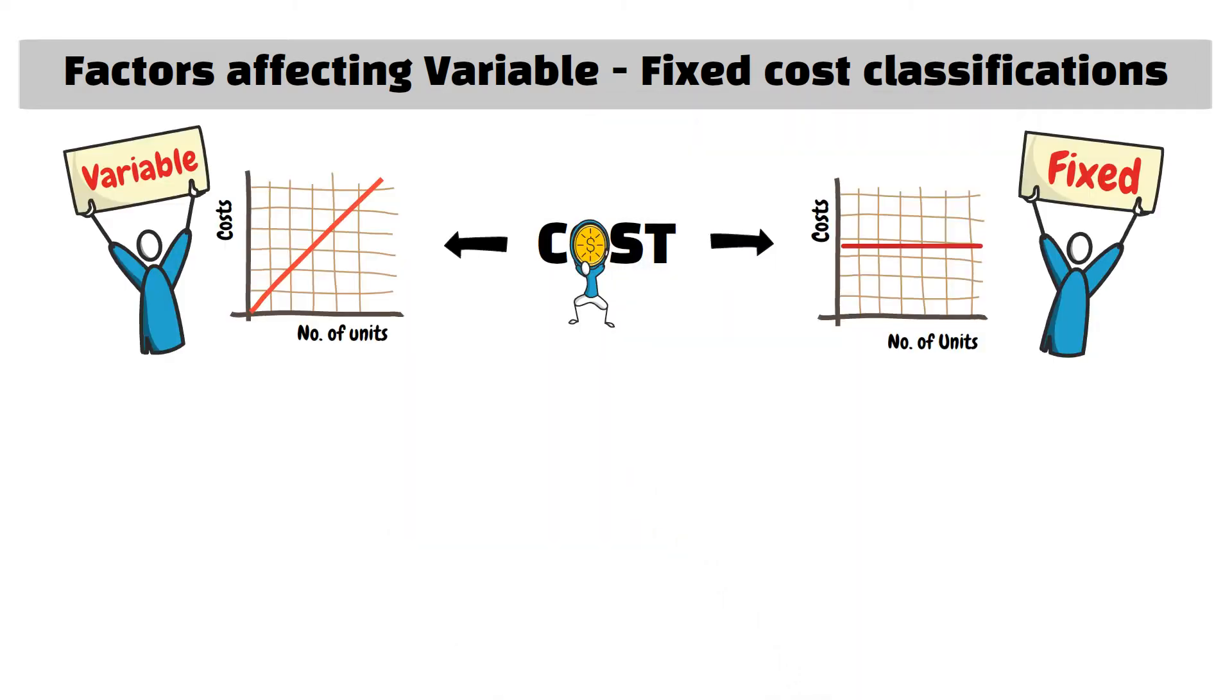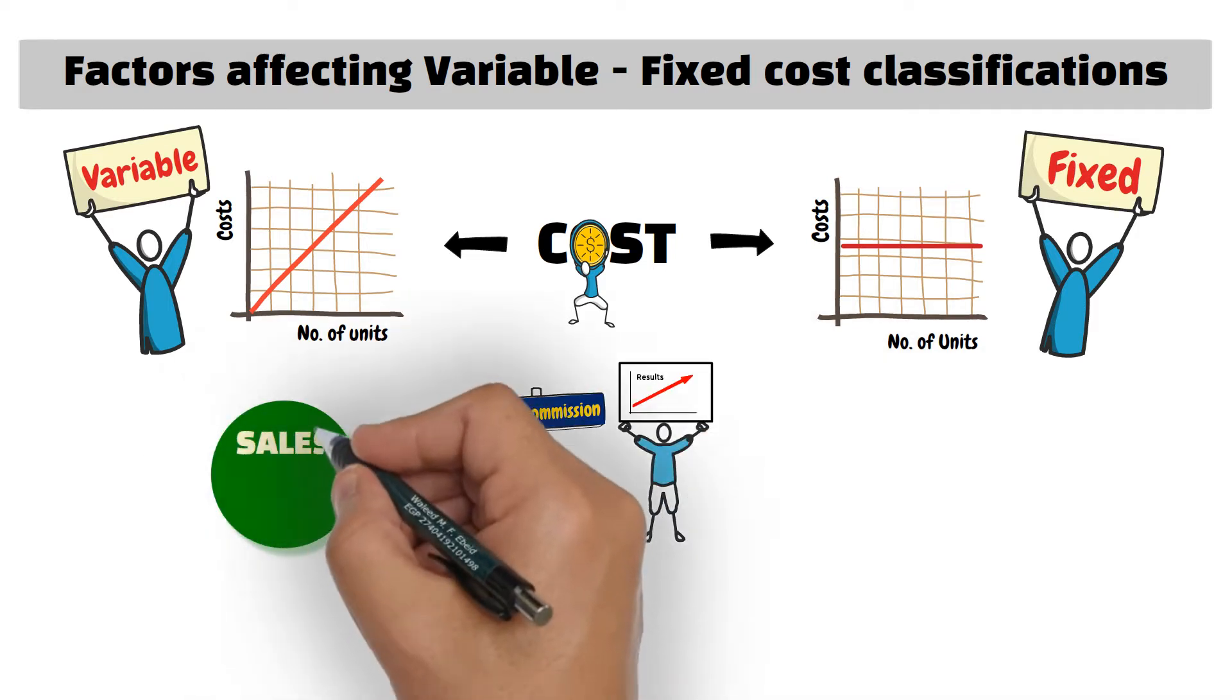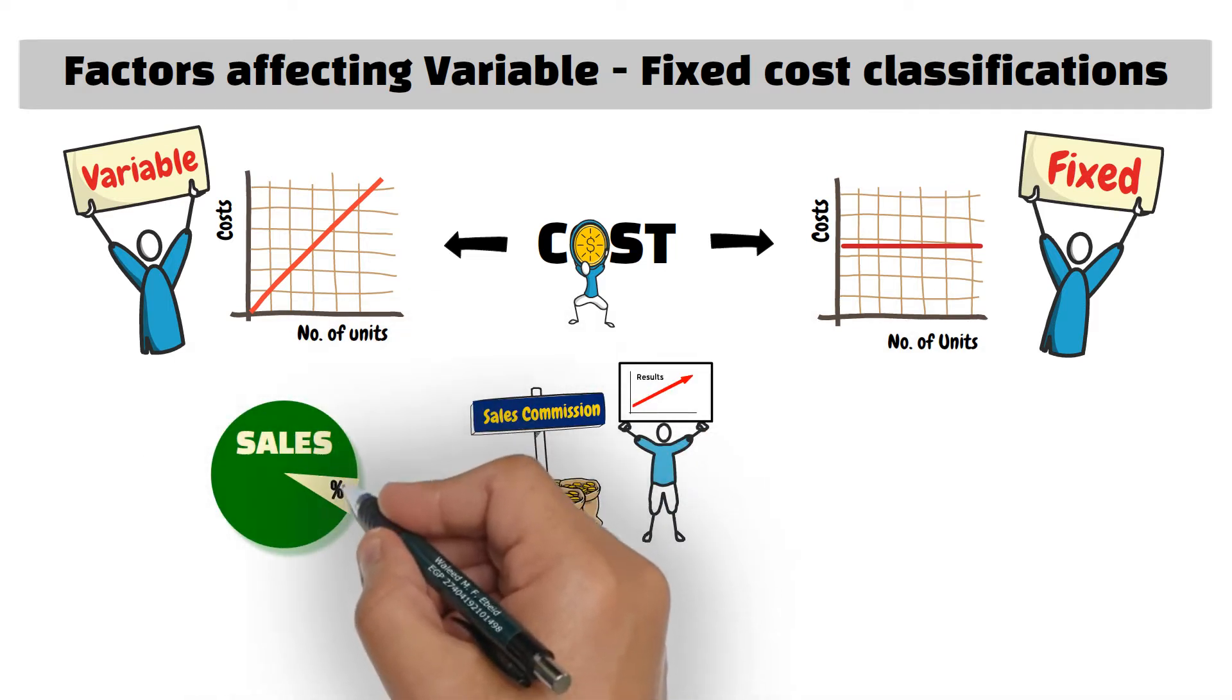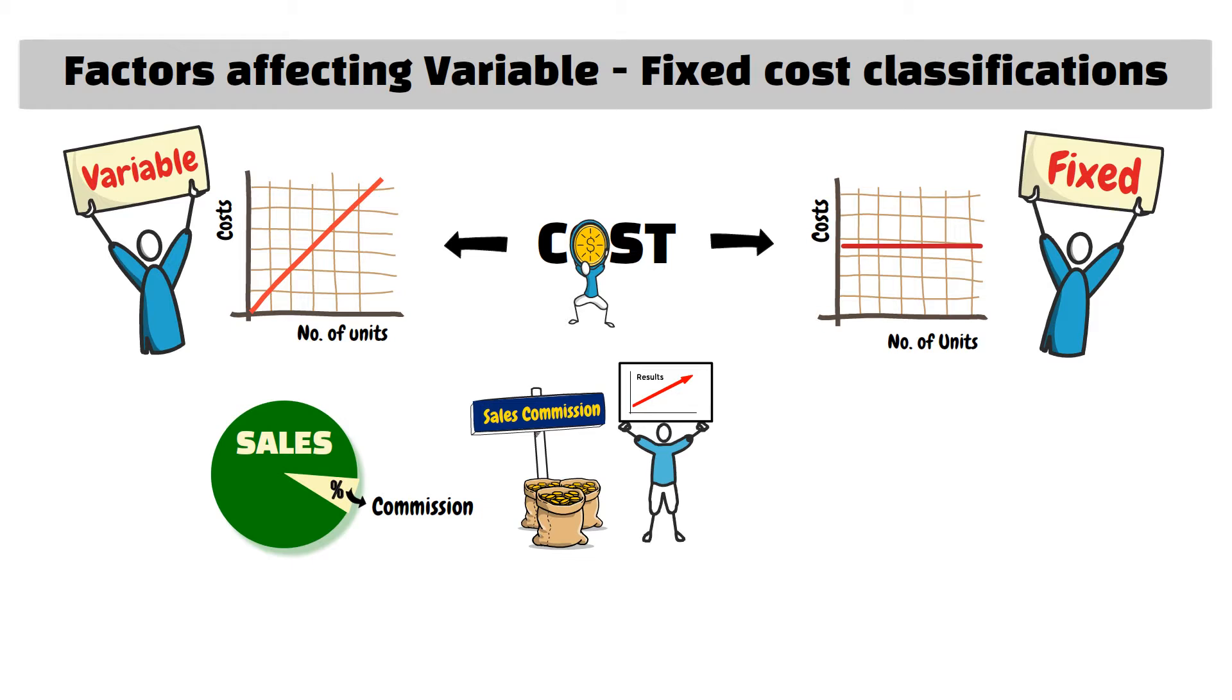The commission paid to a sales agent is a variable cost if it is a percentage of the achieved sales and is a fixed cost when it is a fixed monthly amount regardless of the sales volume achieved.